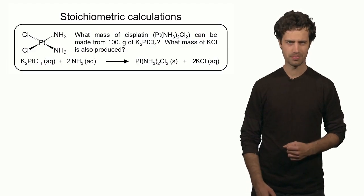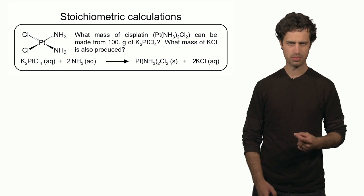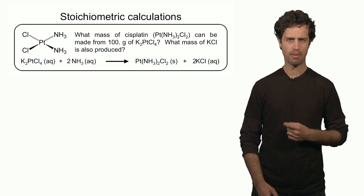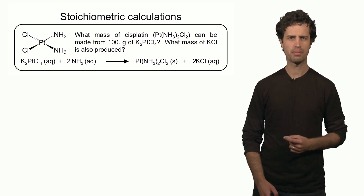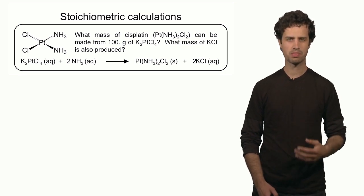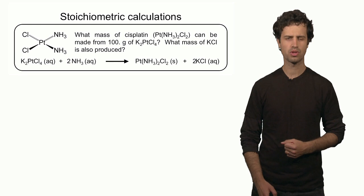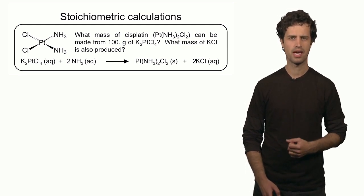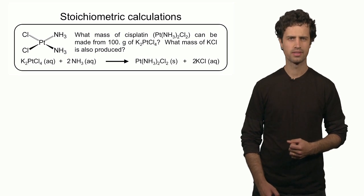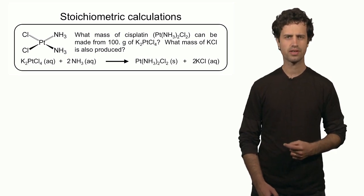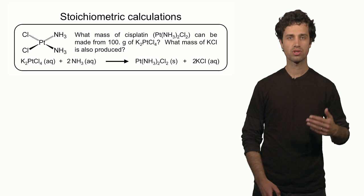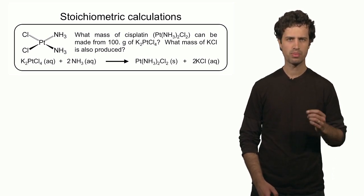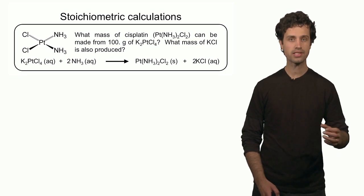Let's look at the following reaction. This is a reaction of a potassium salt — potassium tetrachloroplatinate — which reacts with ammonia to form two compounds. The first is called cisplatin, and the second is potassium chloride. Cisplatin is a very interesting molecule because it has promise as an anti-cancer drug. In this question, we're trying to calculate the grams of cisplatin formed given 100 grams of the potassium salt reagent and an excess of ammonia.